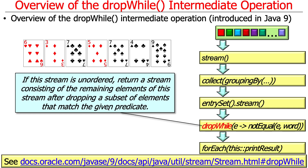The third type of intermediate operation is a little more interesting because it's a stateful operation. Map and filter are not stateful operations — they look at every element that comes past. dropWhile, and there's another one called takeWhile, are stateful intermediate operations.